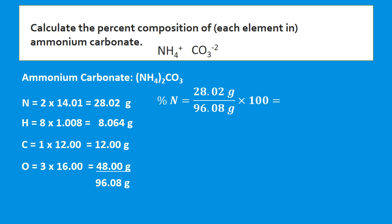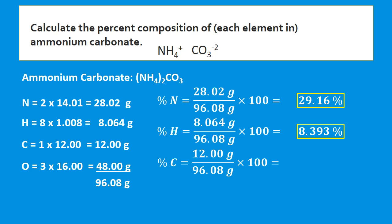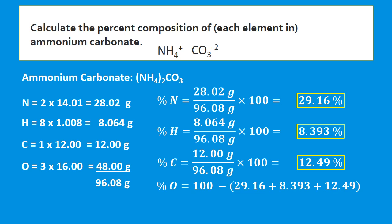Now we find the percent composition of each element. For nitrogen: 28.02 divided by 96.08 times 100 = 29.16%. For hydrogen: 8.064 divided by 96.08 times 100. For carbon: 12.00 divided by 96.08 times 100. We can add all these values together and subtract from 100 to find the percent composition of oxygen, which gives us 49.6% oxygen.